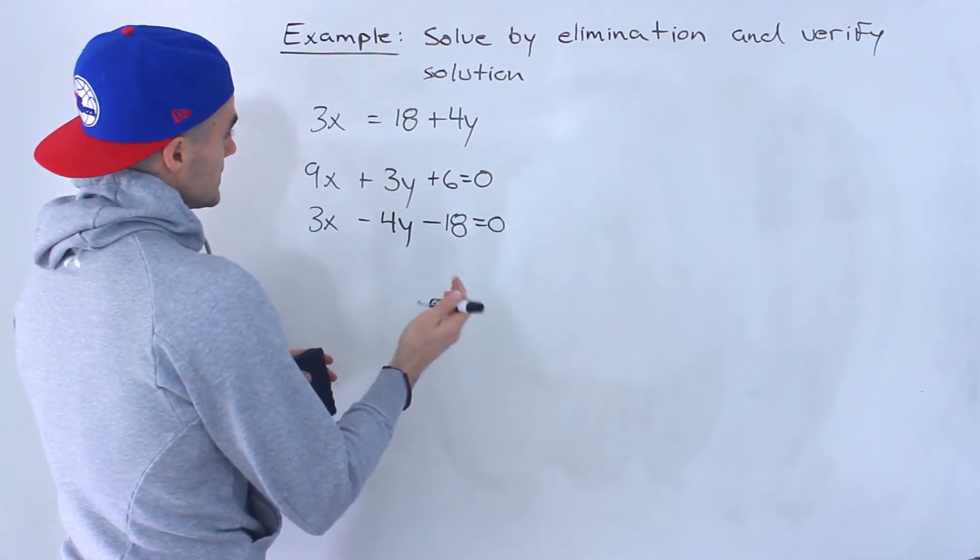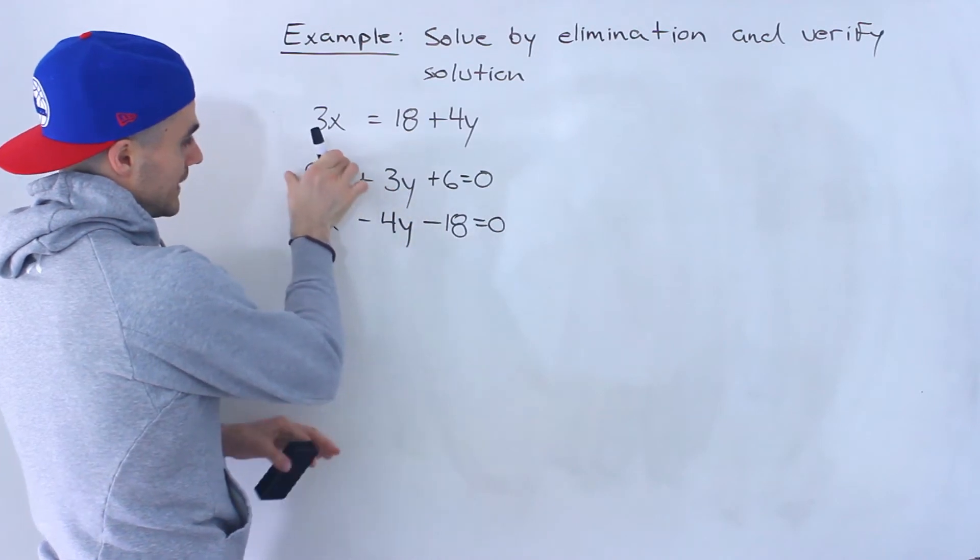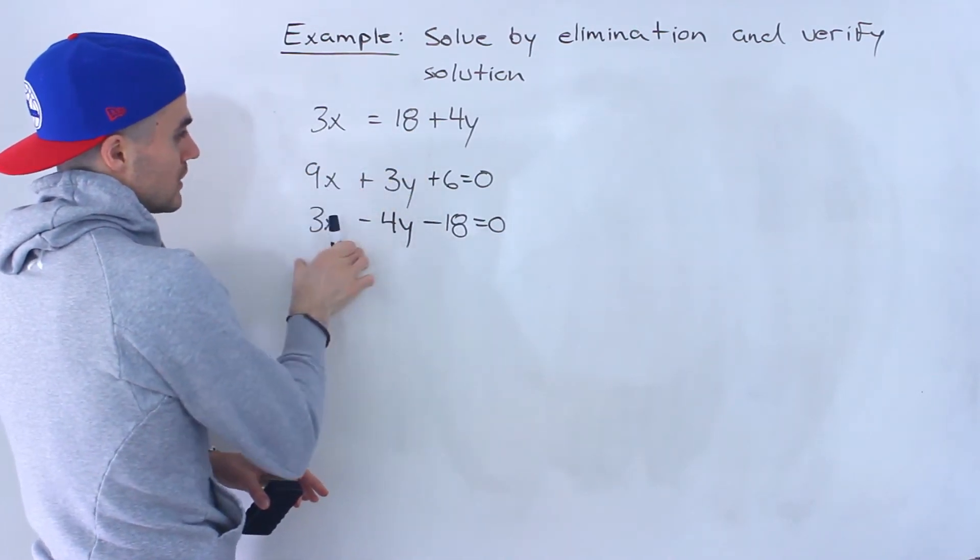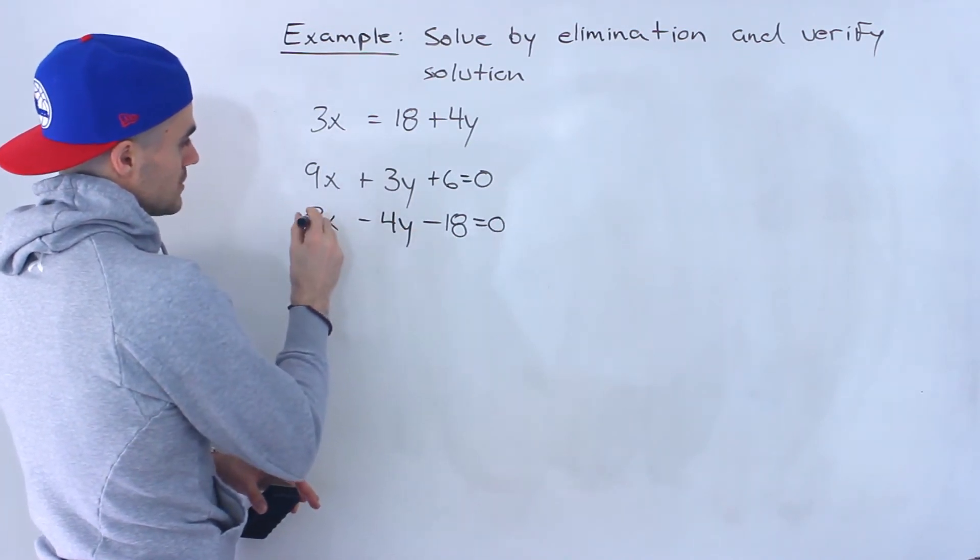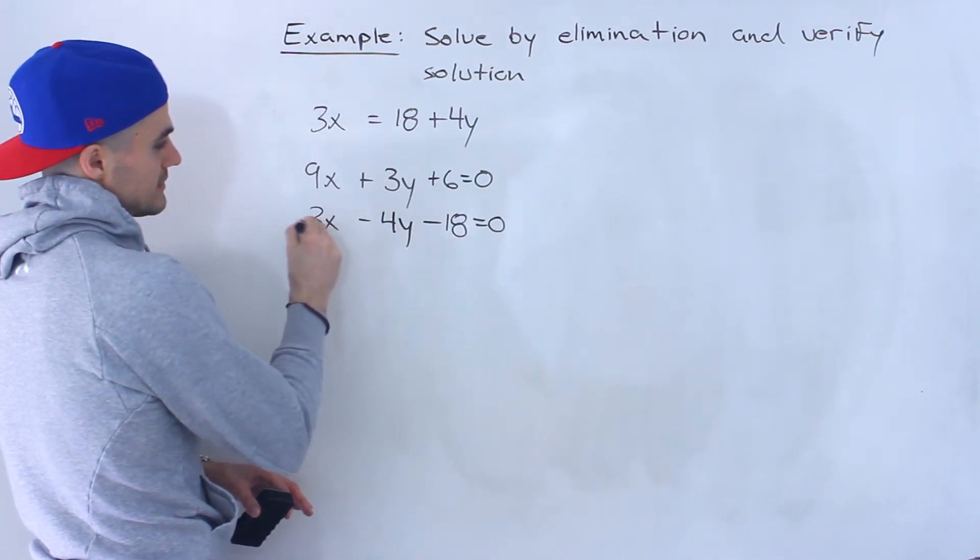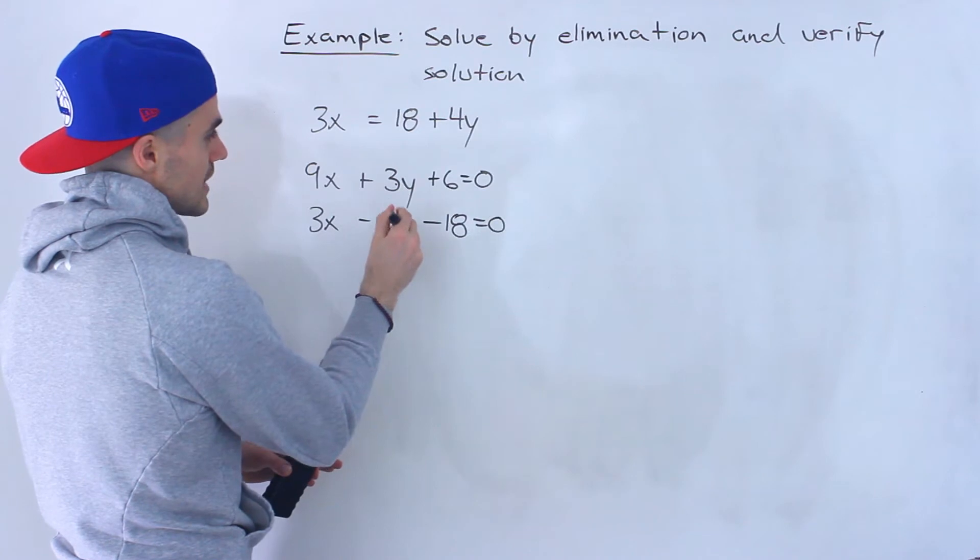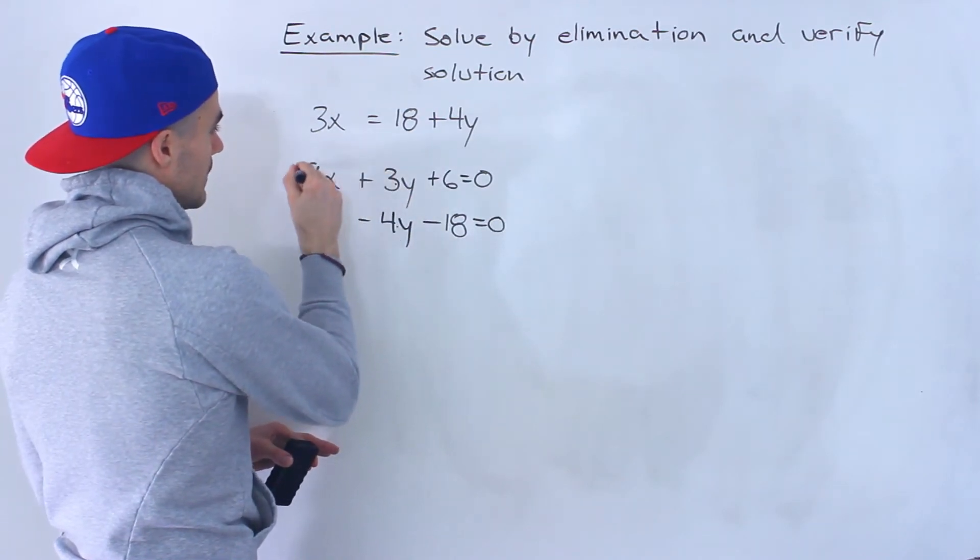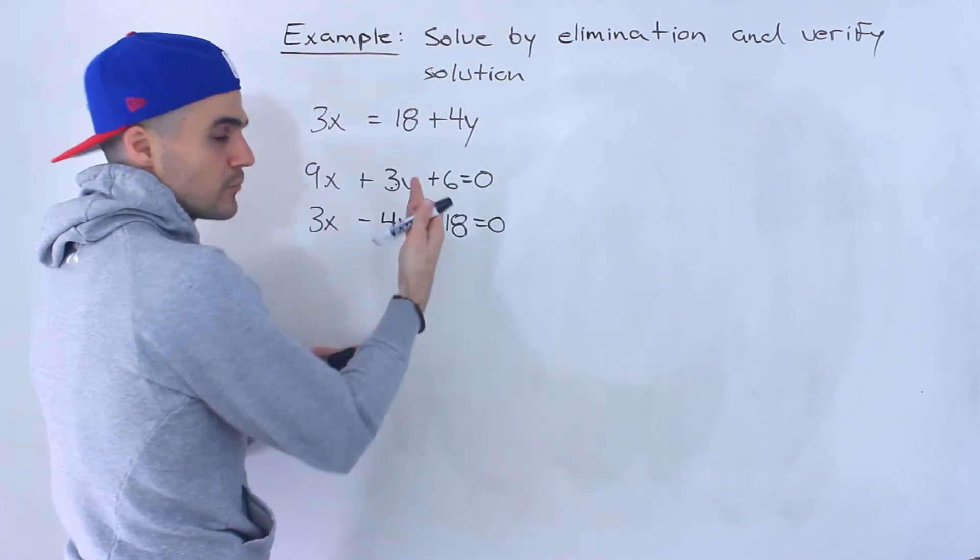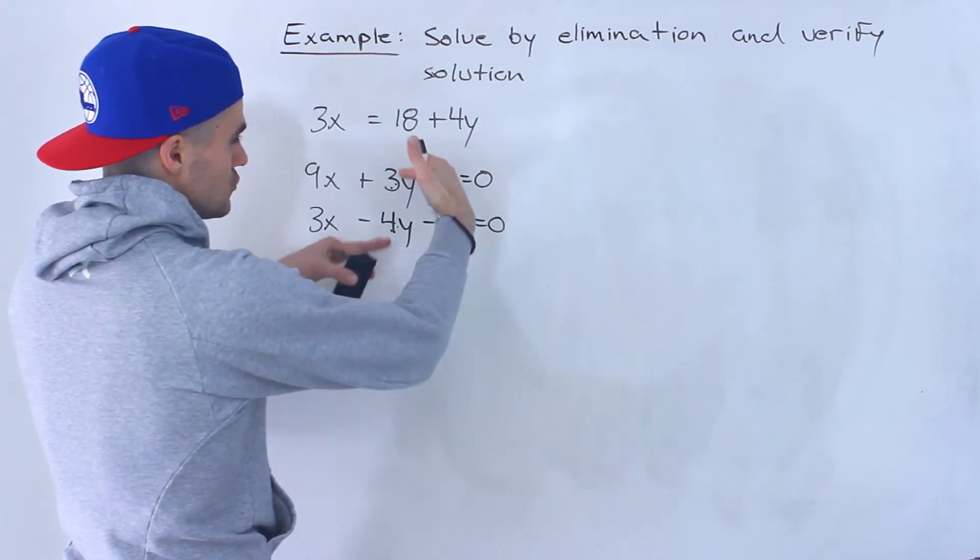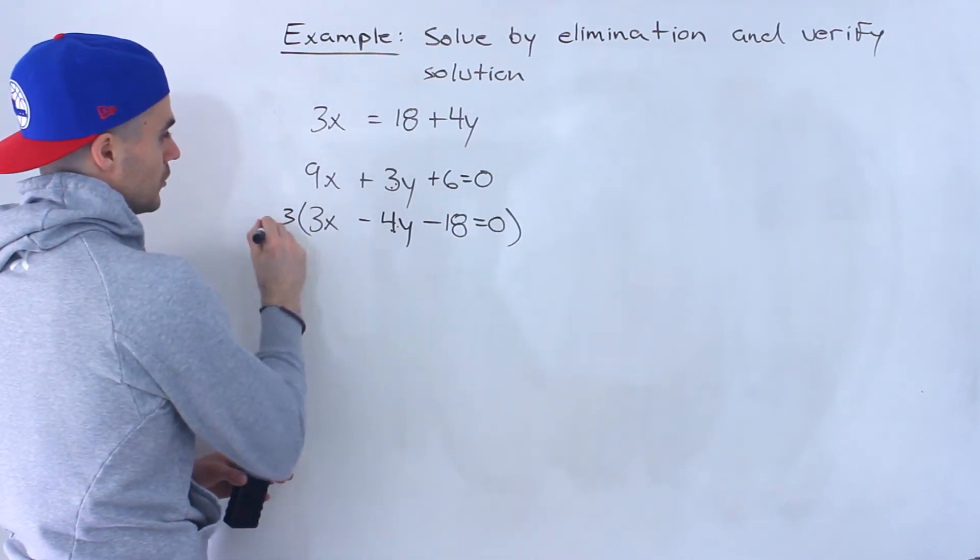From here what you want to do is try to manipulate these lines somehow where we can get rid of a variable, either the y or the x. Now if we want to get rid of the x, I feel like that's going to be more simple than the y because notice we just have to multiply this whole line by 3 to get this 3x to be 9x and then 9x minus 9x would be zero. So what I'm going to do is take this line and multiply everything by 3.